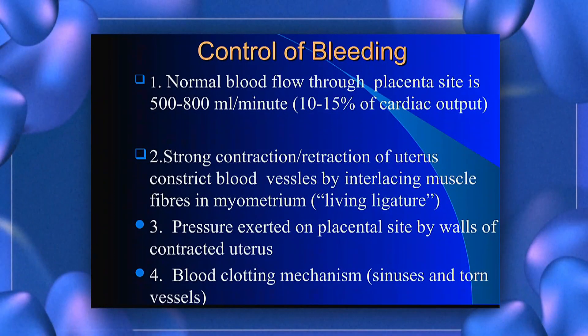After delivery of the placenta, the next step is control of bleeding. Normal blood flow through the placental site is 500 to 800 ml per minute. Control of bleeding occurs through three methods: strong contraction and retraction of the uterus constricting blood vessels via interlacing muscle fibers in the myometrium; pressure exerted on the placental site by walls of the contracted uterus; and the blood clotting mechanism.